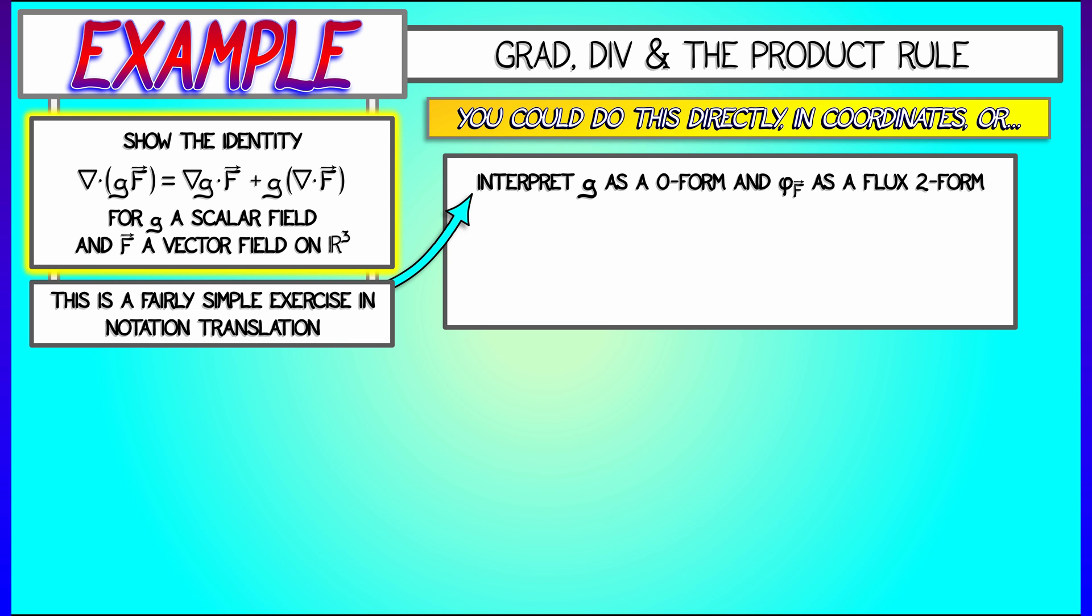We're going to interpret g as a zero-form field, and we're going to consider phi sub f, the flux two-form associated to f. If you take g wedged with phi sub f, that's a two-form field. If you take its derivative, then the differentiation operator on two-form fields acts like divergence. So what is the derivative of g wedge phi sub f? Well, it's dg wedge phi sub f plus negative one to the zero times g wedge d phi sub f. And that zero is because g is a zero-form field.